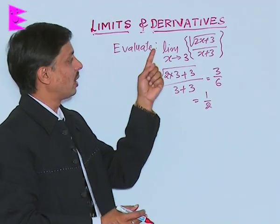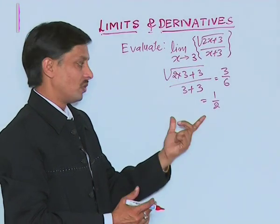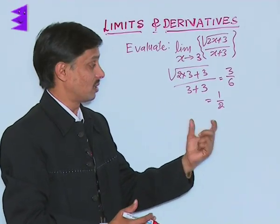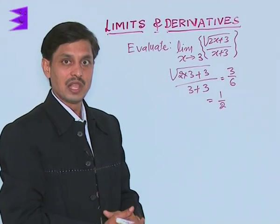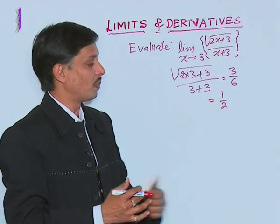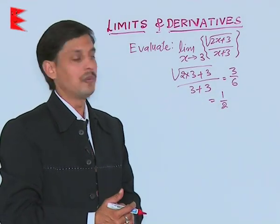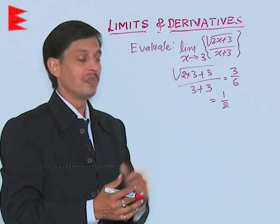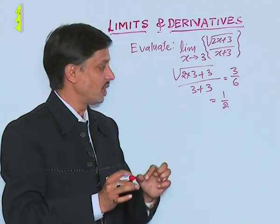If we want to evaluate limit x tending to 3, this is a clear cut valid real answer. It is neither in the form of 0 upon 0 nor in the form of infinity upon infinity, that is why limit is directly existing.